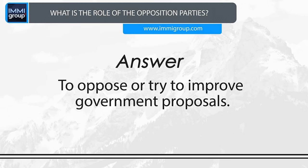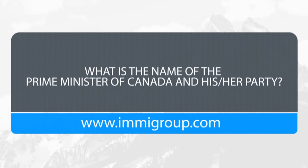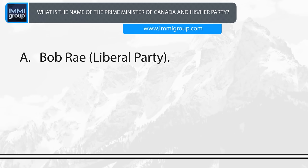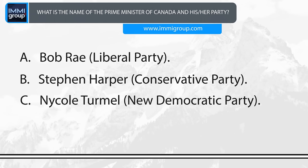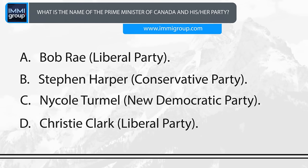What is the name of the Prime Minister of Canada and his/her party? A. Bob Ray, Liberal Party. B. Stephen Harper, Conservative Party. C. Nicole Turmel, New Democratic Party. D. Christy Clark, Liberal Party. Answer: Stephen Harper, Conservative Party.